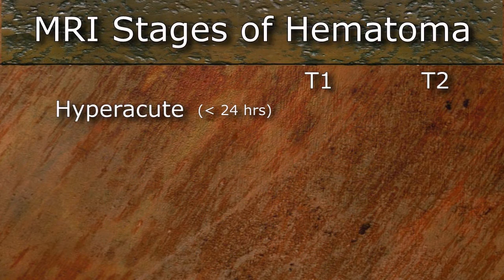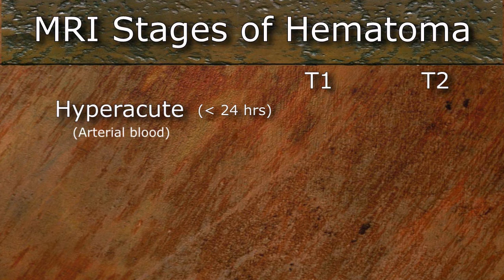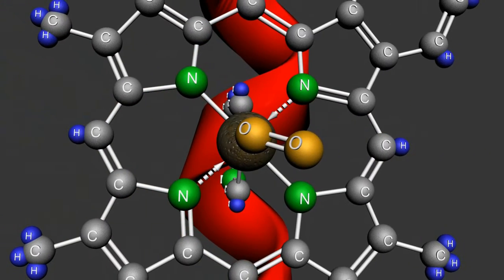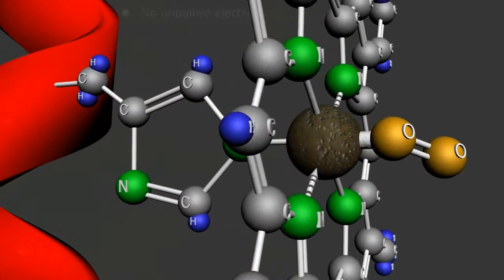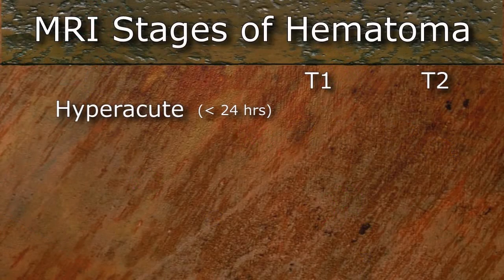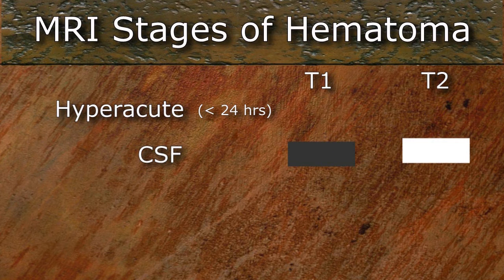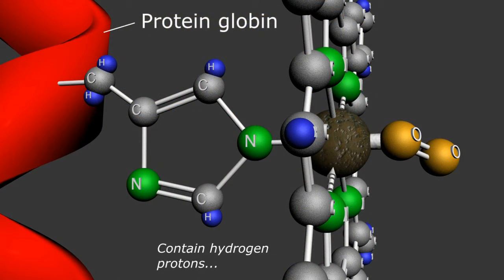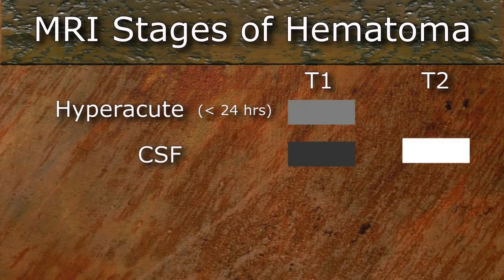A hyperacute bleed is seen in the first 24 hours after an arterial disruption. Since this is coming from an artery, 95% of the hemoglobin will be carrying an oxygen molecule, and therefore this complex is labeled oxyhemoglobin. Oxyhemoglobin has no unpaired electrons and is therefore diamagnetic with no substantial local magnetic effect. We would therefore expect the hyperacute bleed to look identical to the surrounding CSF — dark on T1 and bright on T2 — but the proteins of the red blood cells, plasma, and globin molecule contain hydrogen protons which provide some T1 signal,